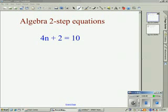Here we need to solve for n. We have 4n plus 2 equals 10. Remember, the number and the variable written next to each other shows us that we need to multiply. So our two operations are addition and multiplication, and it's going to take us two steps to solve it.